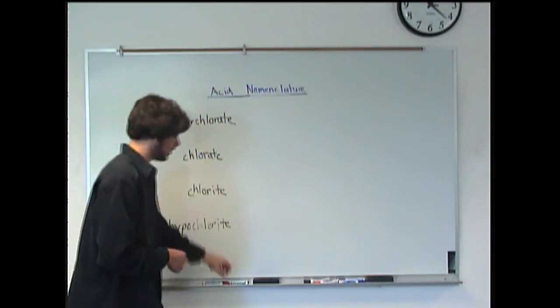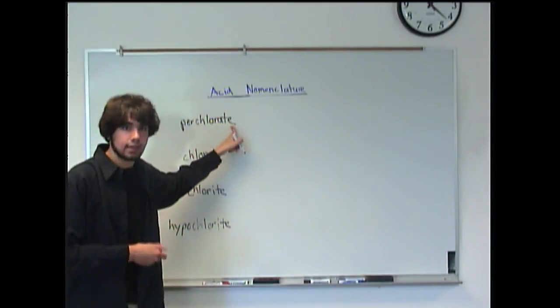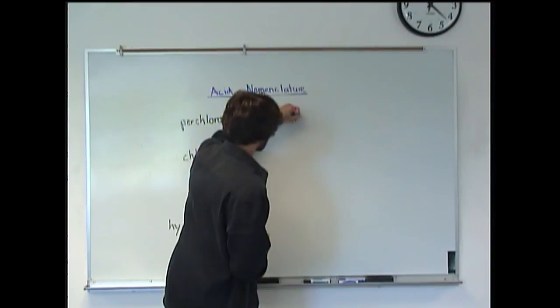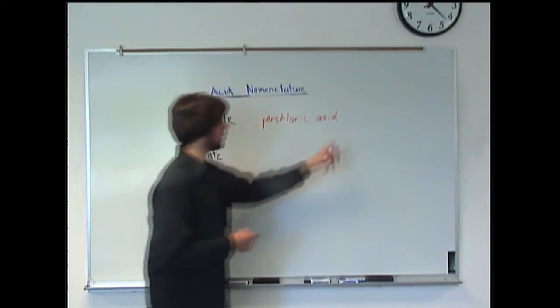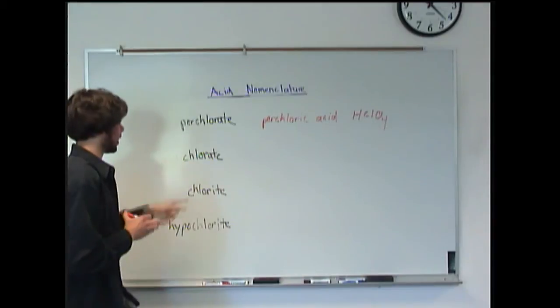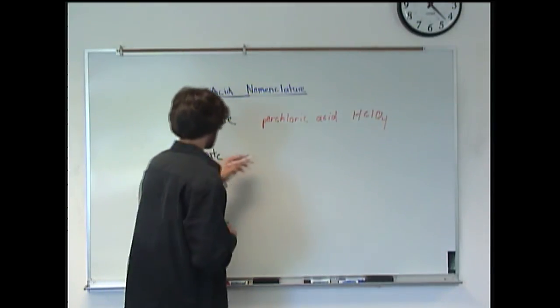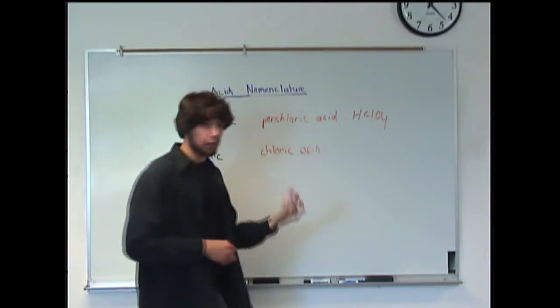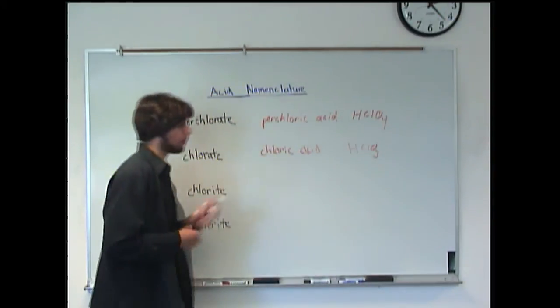So basically all you got to look at is your endings. So when you are going to name these guys perchlorate, pretty simple. Drop the ATE and add IC. So this will become perchloric. Remember to keep the prefix there. Perchloric. And obviously since we are making it an acid we have to add the acid. And for this particular one it would be HClO4. That's what it would look like. Now we have chlorate. Again we see we have the ATE ending. So we have to replace that with the IC ending for an acid. So it's going to become just chloric acid. And if you know this polyatomic ion when you make it into an acid it's going to look like this, HClO3.